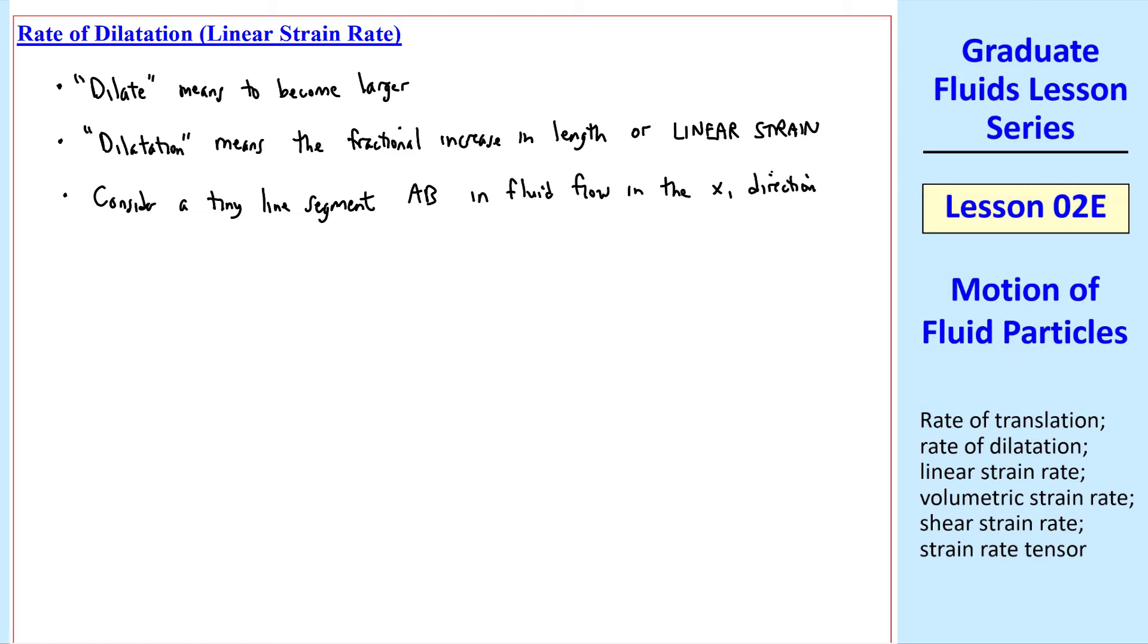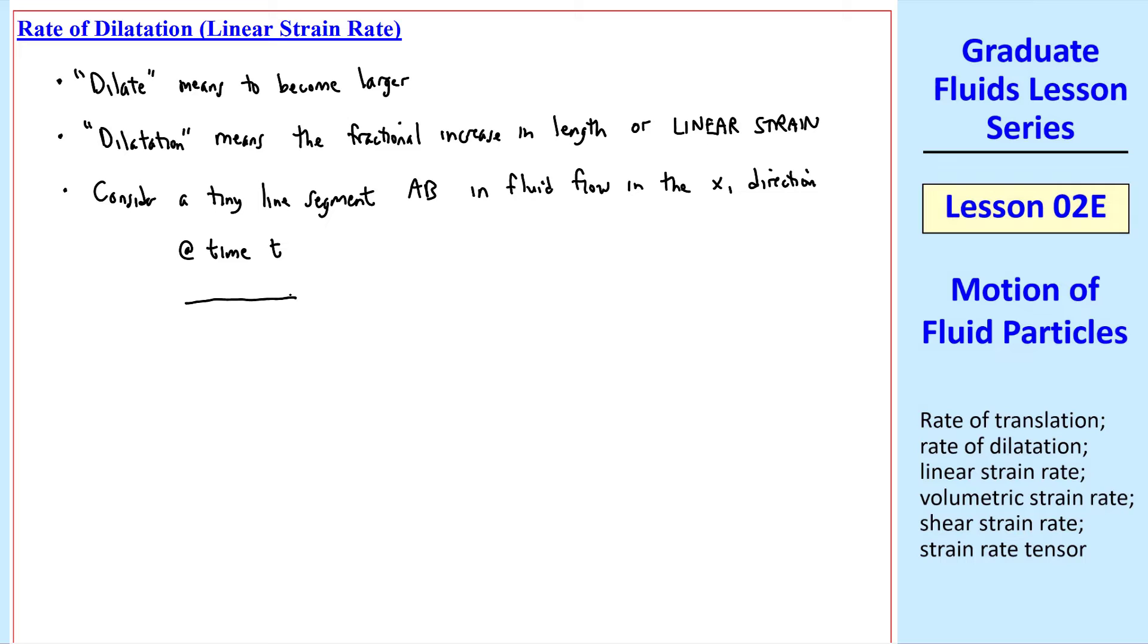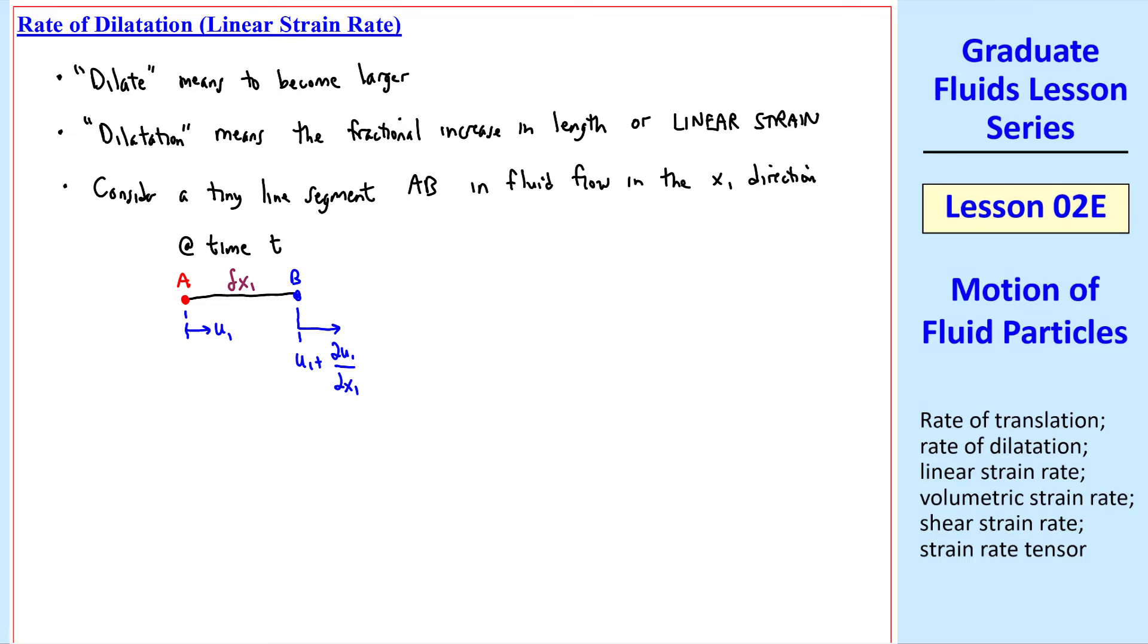In a fluid flow in the x1 direction only. At time t, we have a line segment. We'll define A as the left point, and B as the right point. The length of this line segment is delta x1. Suppose the velocity at point A is u1, only in the x1 direction, to the right. Using a truncated Taylor series expansion, the speed at B would be a little bit bigger in this case, u1 plus del u1 del x1 times delta x1.